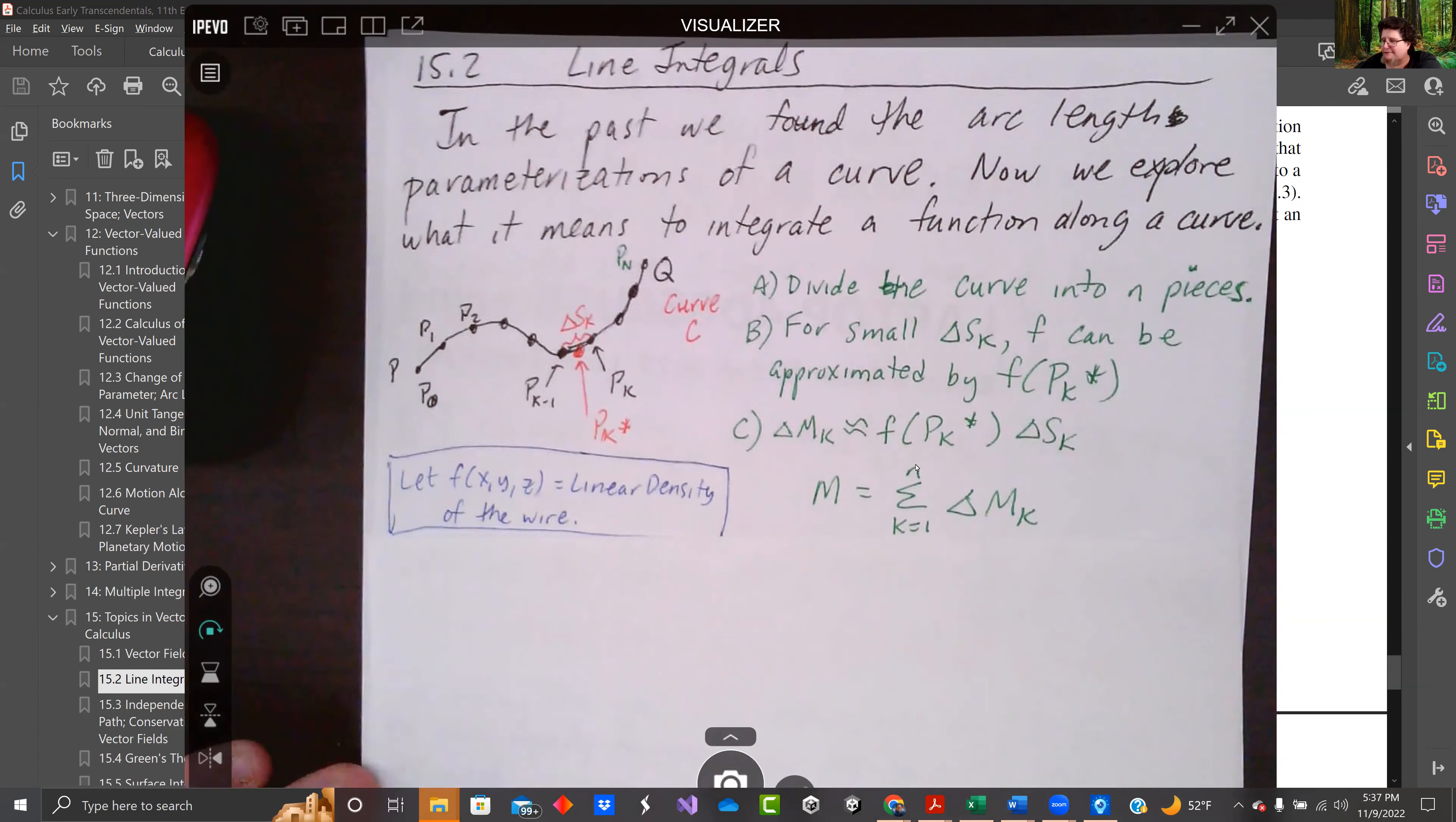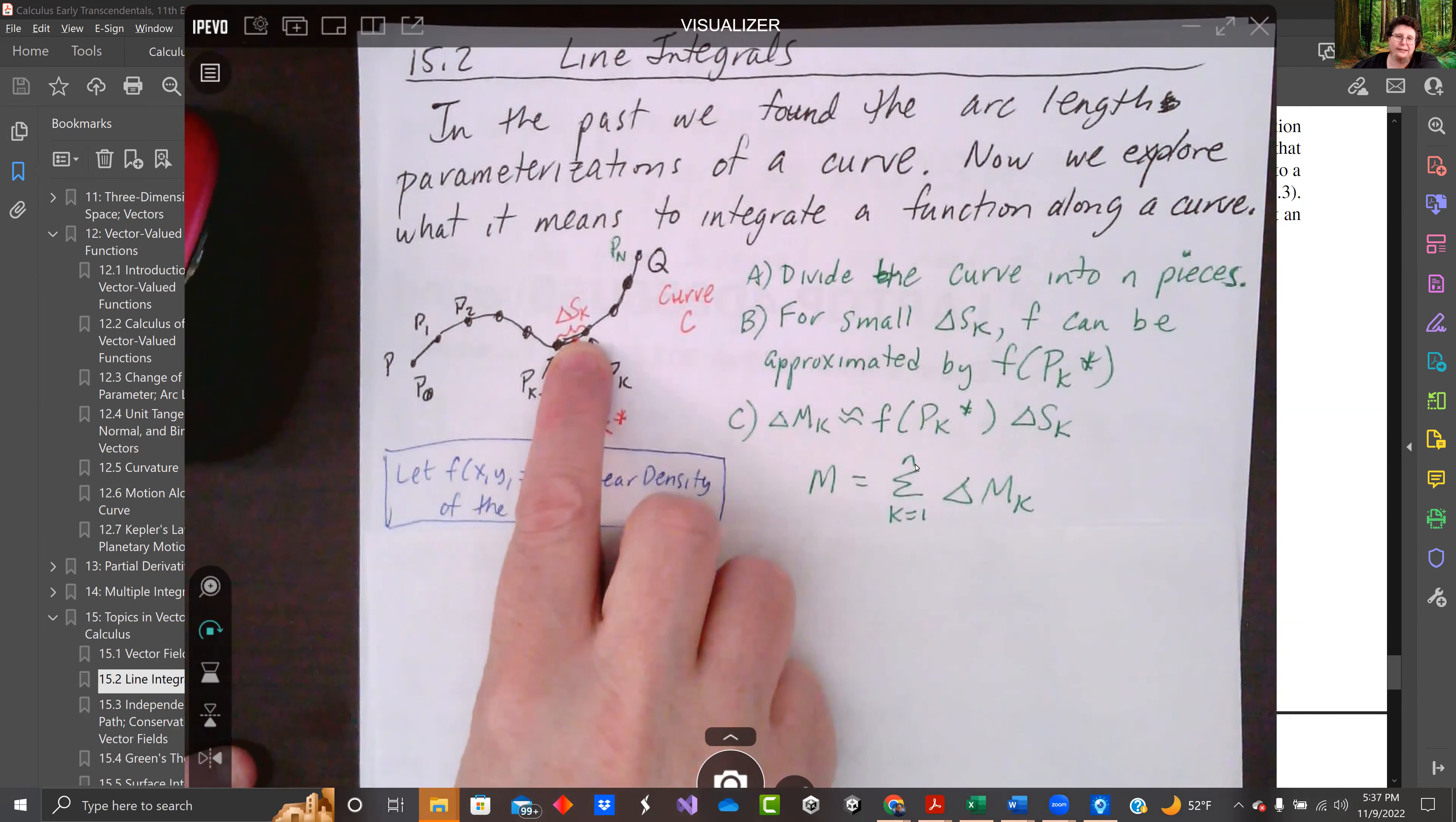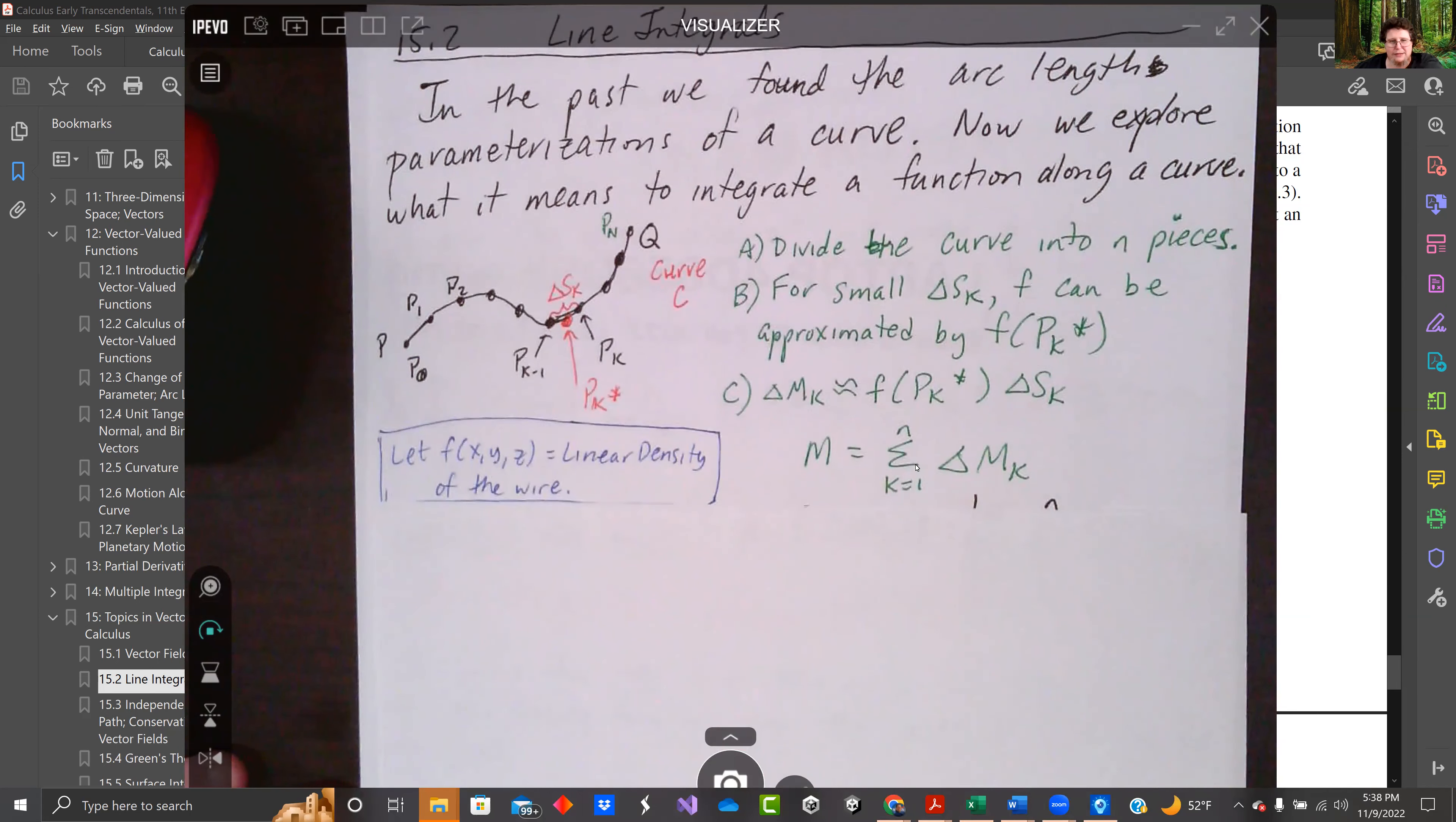For each piece, go along the piece and figure out the mass by plugging in the midpoint or pk star into our f. Mass is density per unit area, or density is mass per unit length. So the mass would be density times the length. The arc length is s. This will be the arc length for that little tiny piece. And the density will be pk star plugged into the function at that spot. So we can find the mass of that little segment. If we did n different segments, we could find the mass of each segment by adding up those little tiny mass pieces.